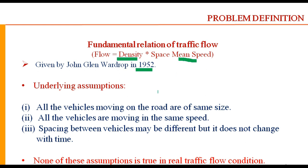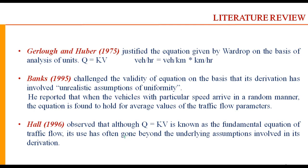This equation was derived under certain assumptions: all vehicles on the road are of the same size, all vehicles are moving at the same speed, and spacing between vehicles may be different but does not change with time. That means it is for uniform traffic flow of vehicles of the same size moving at the same speed. None of these assumptions is true in real traffic flow conditions, and opinion of researchers is quite divided on this subject.